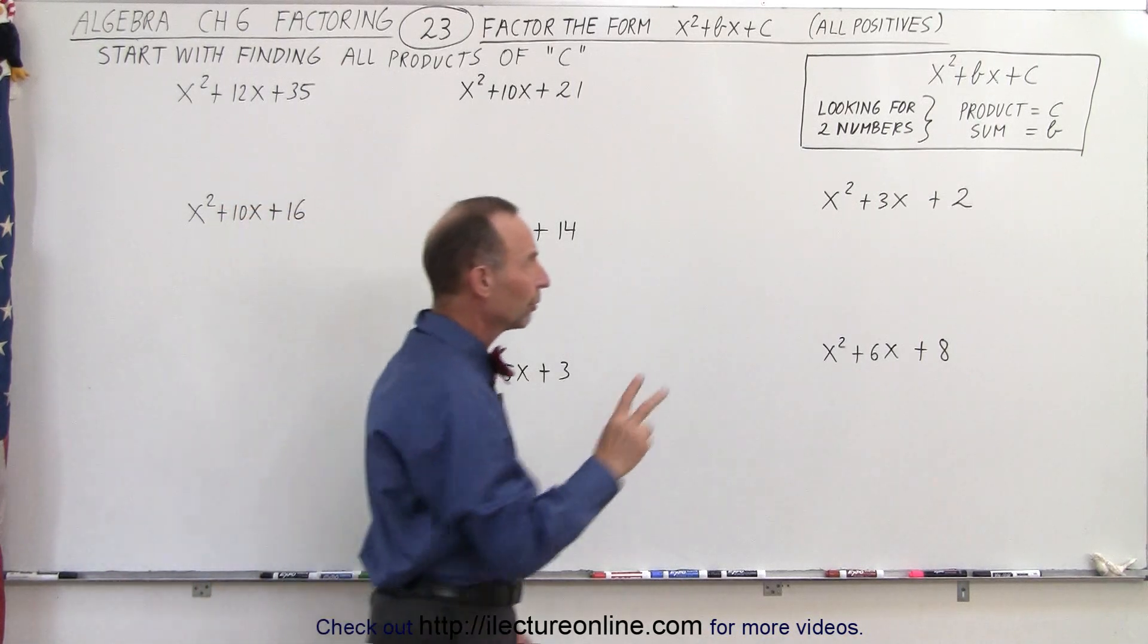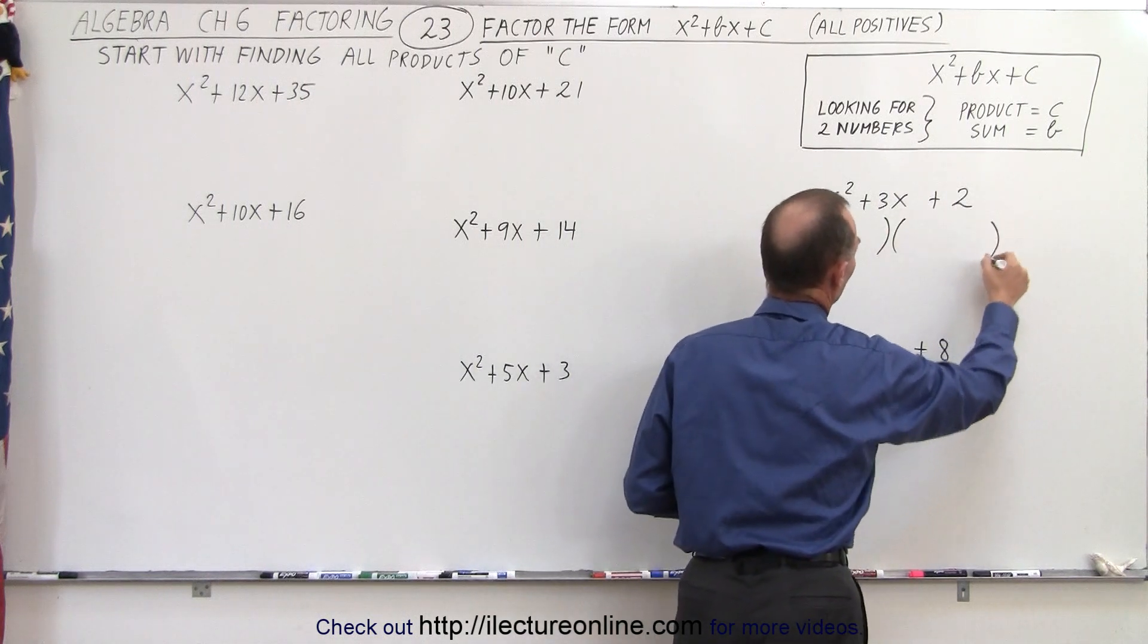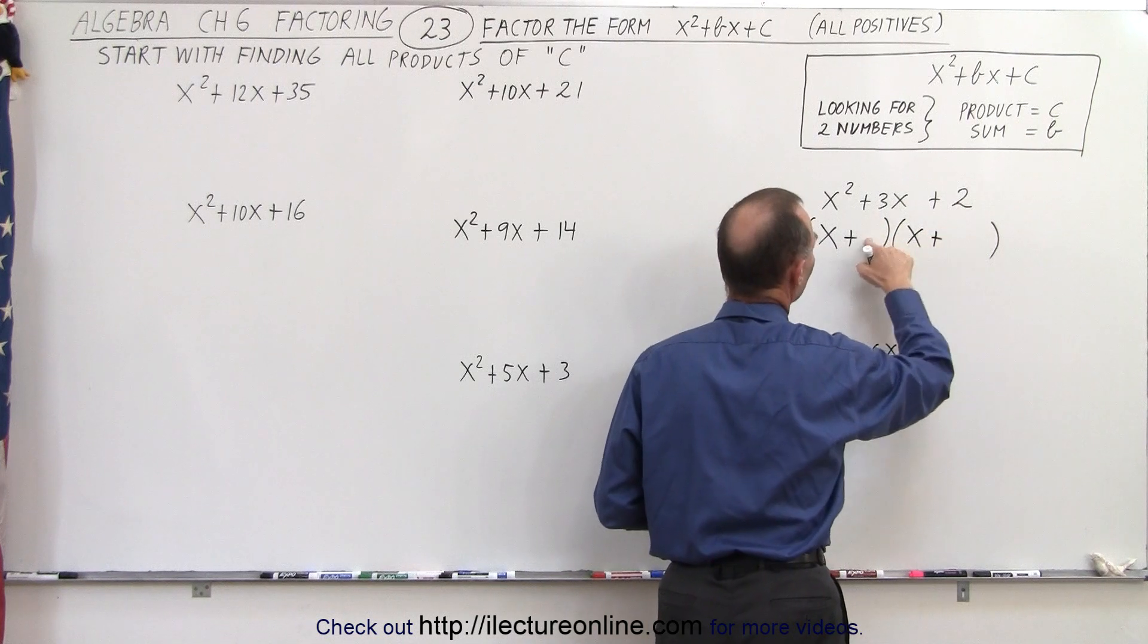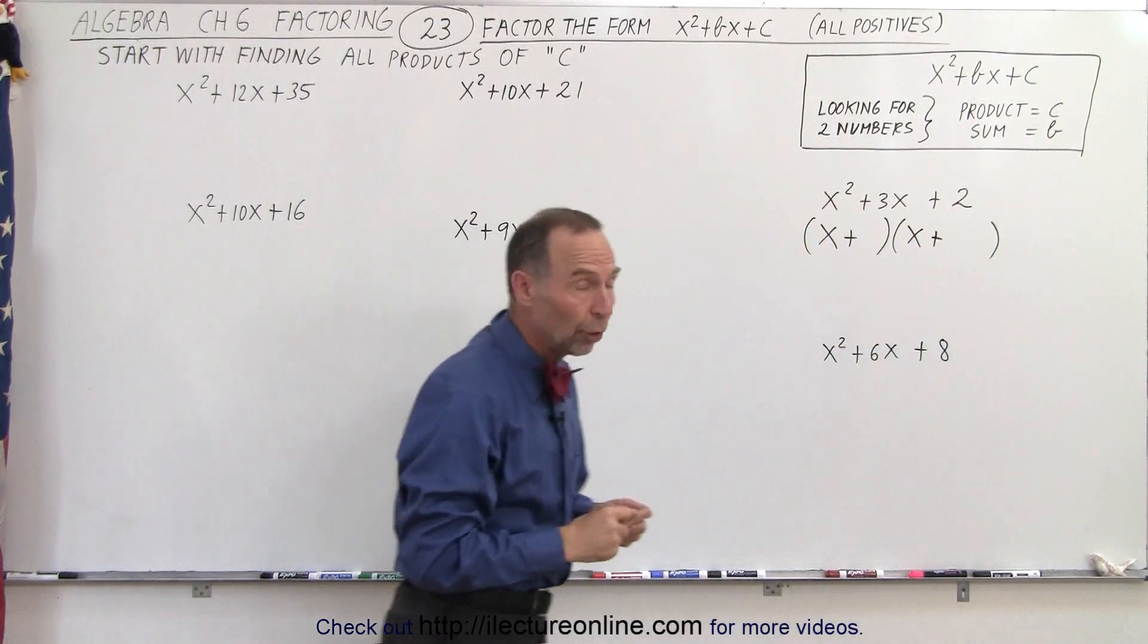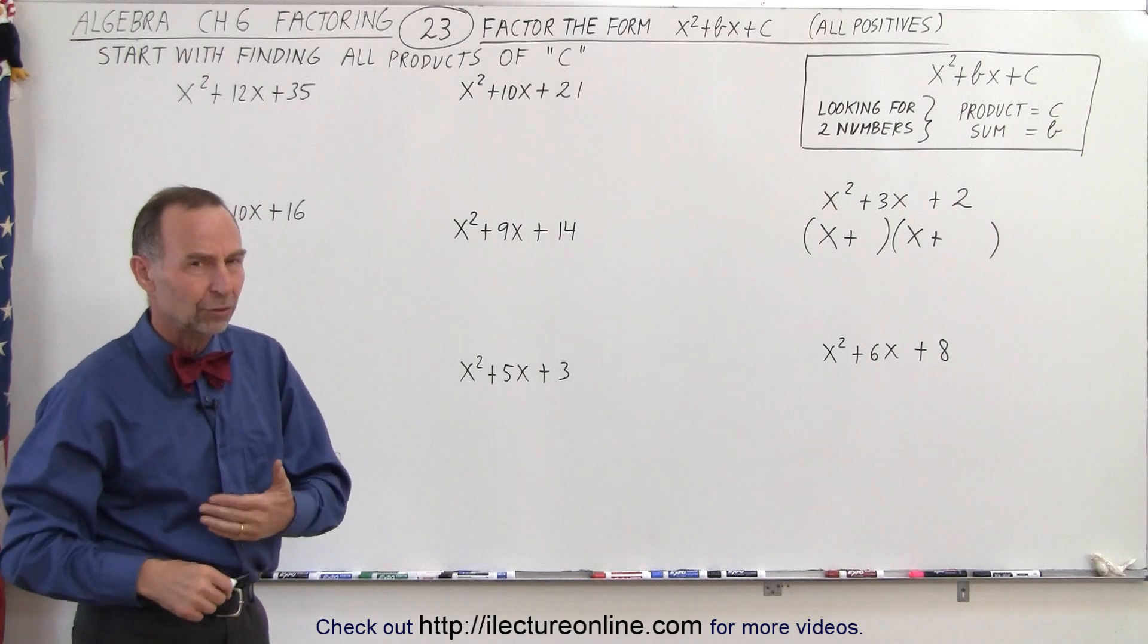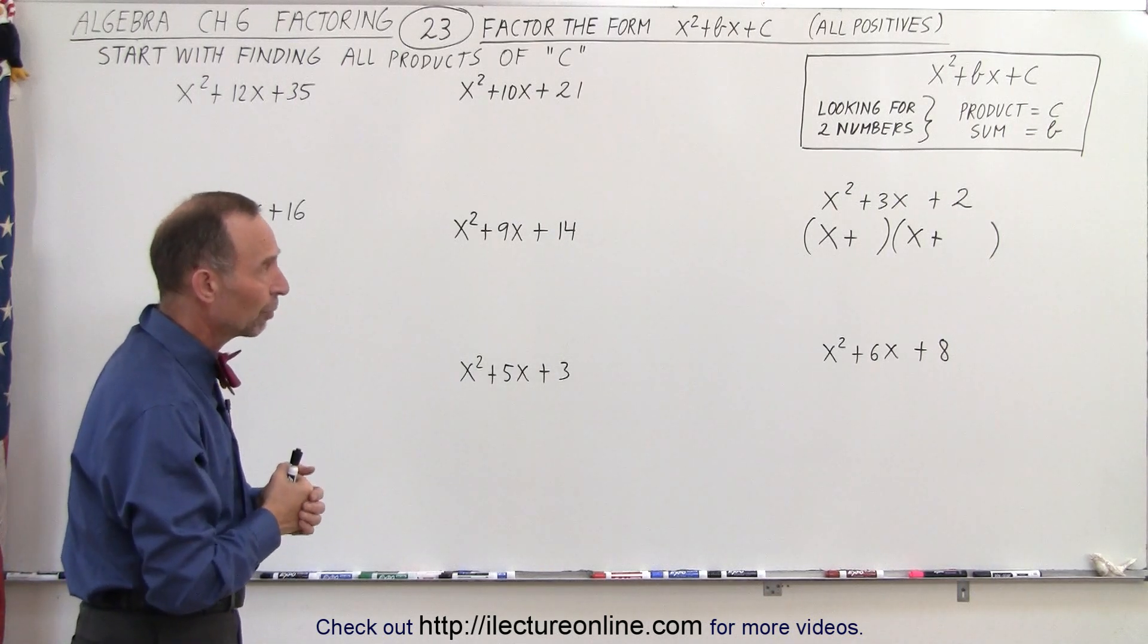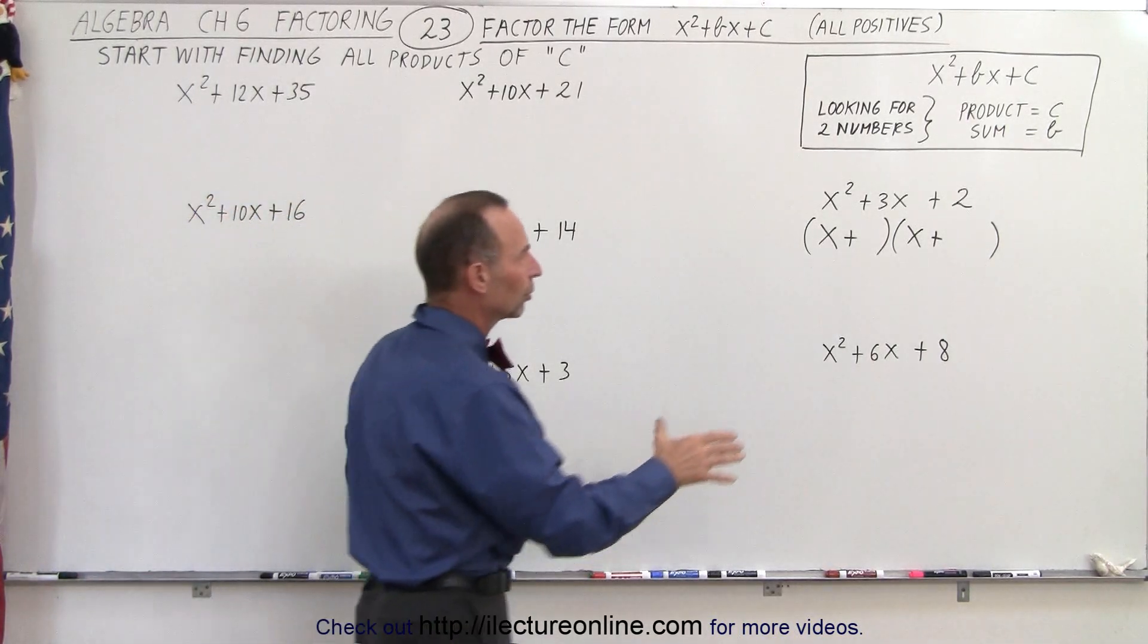Notice that we're looking for two numbers because what we want to do is write it like this. We're going to have an x and an x, a plus and a plus, and now we're looking for two numbers to place in these two binomials. Notice that all of these are all positives. In other words, there's no negative sign anywhere to be found. We're going to show you how to deal with it when we also have negative signs, but in this case notice there are positives everywhere, so we know that it's going to look like this.